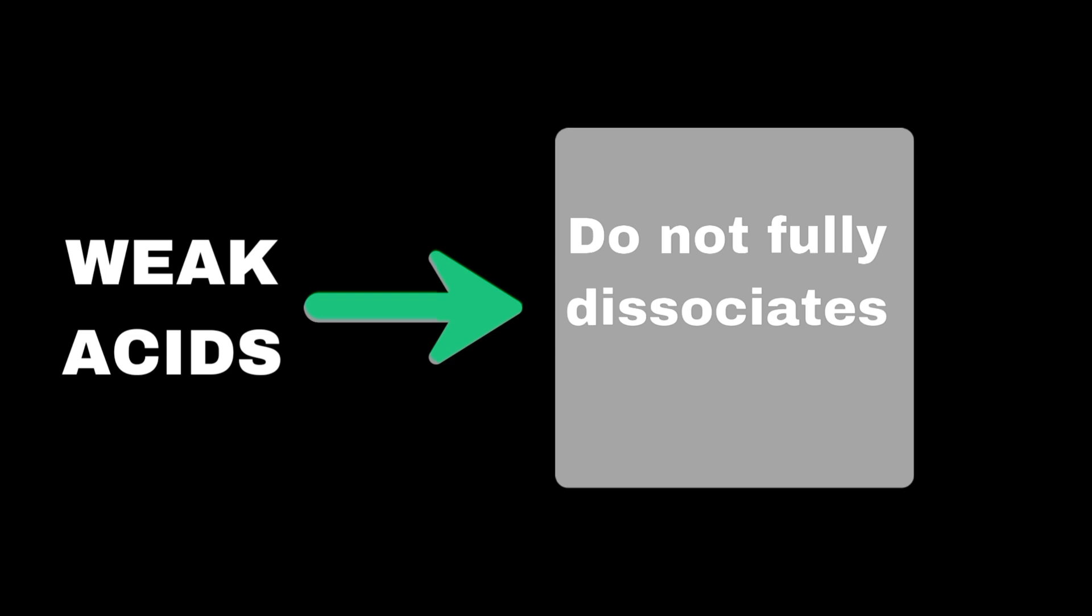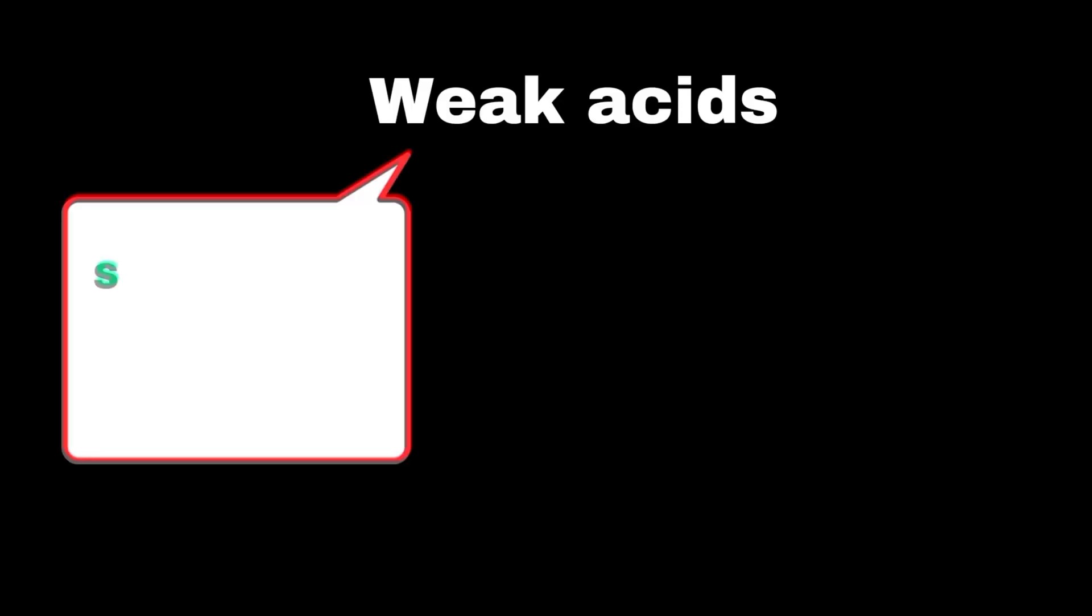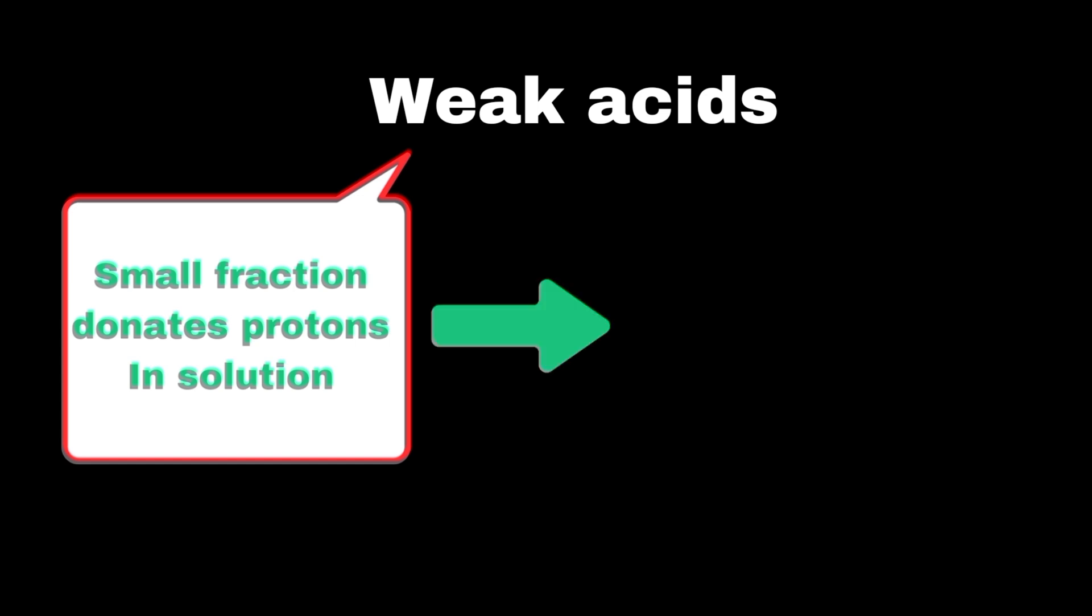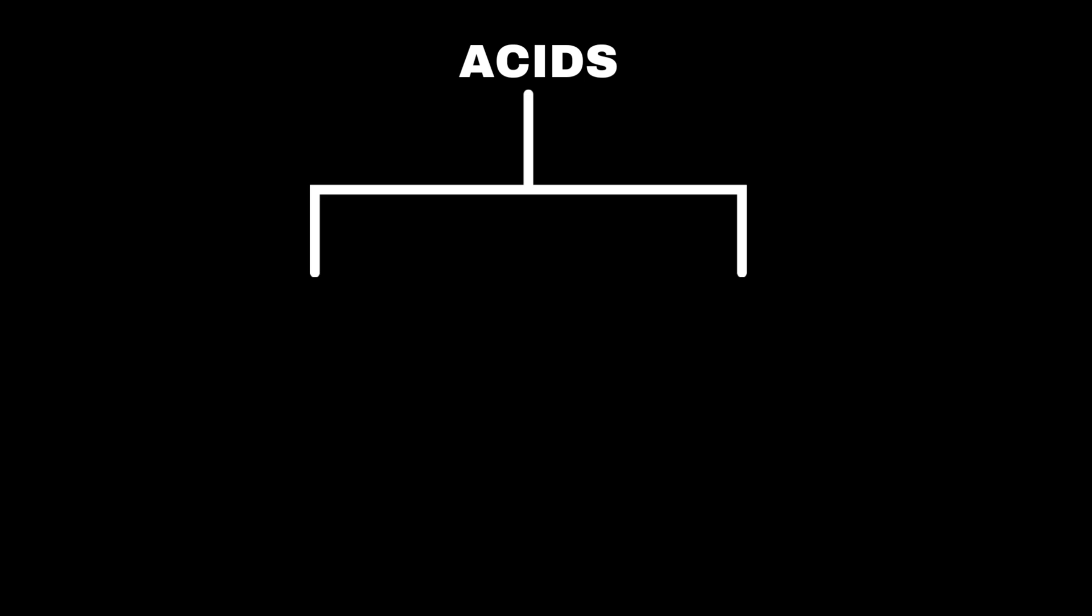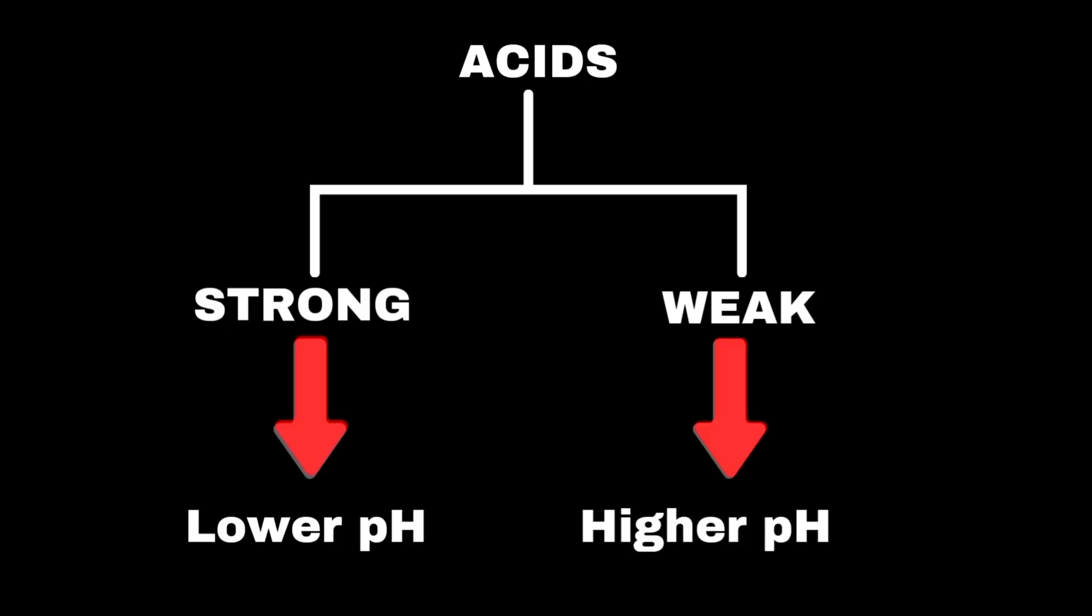Weak acids are acids that do not fully dissociate into their ions in an aqueous solution. This means only a small fraction of the acid molecules donate protons to the solution, resulting in an equilibrium between the undissociated acid and its ions. As a result, weak acids have a higher pH compared to strong acids at the same concentration.